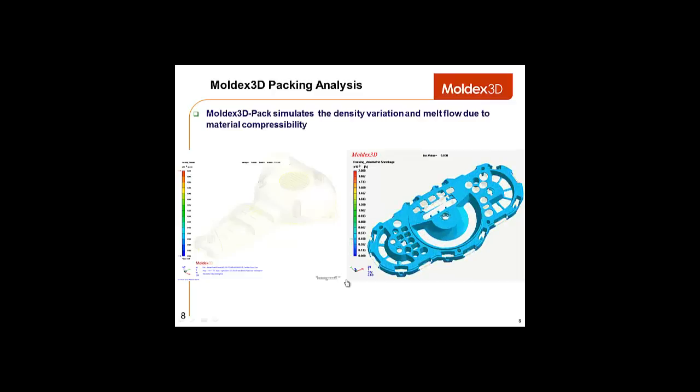During the packing phase, Moldex 3D can simulate the density variation and melt flow due to material compressibility. On the right side is an animation of the slicing function, which cuts a plane through the model. This allows you to see what is occurring on that plane throughout the model. You can also see the volumetric shrinkage, which is the percentage that the plastic has shrunk during the packing phase. And the animation is able to show an isosurface display, which shows the solid elements that correspond to a specific value. And we usually use this to find areas of high volumetric shrinkage. And those are areas that tend to correlate with areas that are prone to either voids or sink marks.